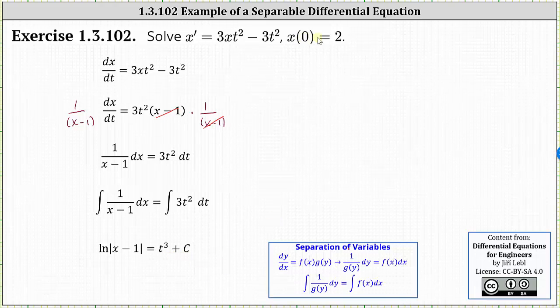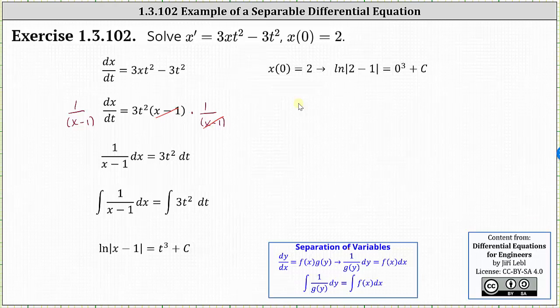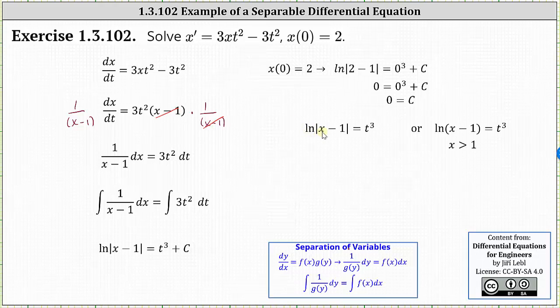Now we use the initial condition x of zero equals two to determine the constant c. To do this, we substitute zero for t and two for x. This gives us natural log of the absolute value of two minus one equals zero cubed plus c. Natural log of one is equal to zero, giving us zero equals zero cubed plus c, and therefore c equals zero.